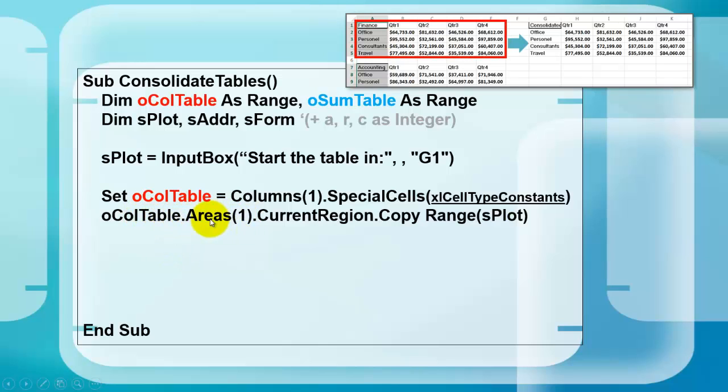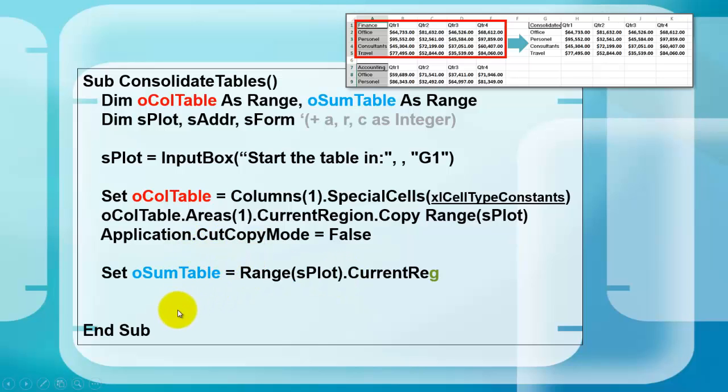In O column table, we talk to the first area, take the current region of that whole thing, and copy that whole entity to range S plot. So we got an exact replica here the first time. And then later on we are going to add the second area and the third area. We turn the cut copy mode off. Then we set O sum table to the current region around range S plot. That is O sum table.